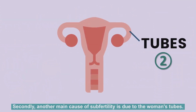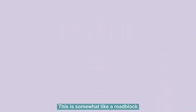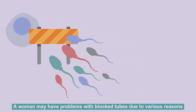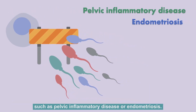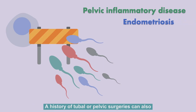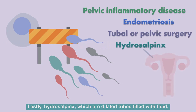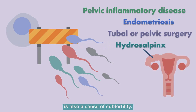Secondly, another main cause of subfertility is due to the woman's tubes. This is somewhat like a roadblock on the passage for the sperm to meet the egg. A woman may have problems with blocked tubes due to various reasons, such as pelvic inflammatory disease or endometriosis. A history of tubal or pelvic surgeries can also cause scarring from outside the tubes and cause occlusion. Lastly, hydrosalpinx, which are dilated tubes filled with fluid, is also a cause of subfertility.